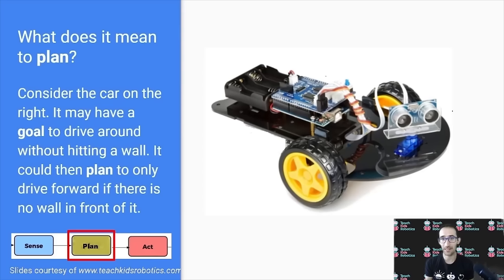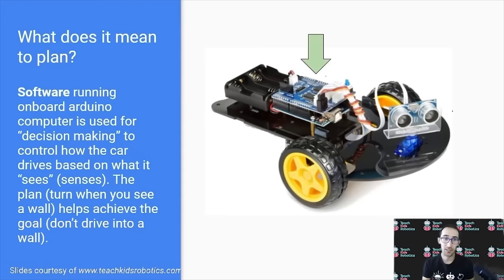What does it mean to plan? Consider the car on the right again. It may have a goal to drive around without hitting a wall. It could then plan to only drive forward if there's no wall in front of it. Software running on an onboard computer, such as an Arduino, is used for decision-making, to control how the car drives based on what it sees or senses.